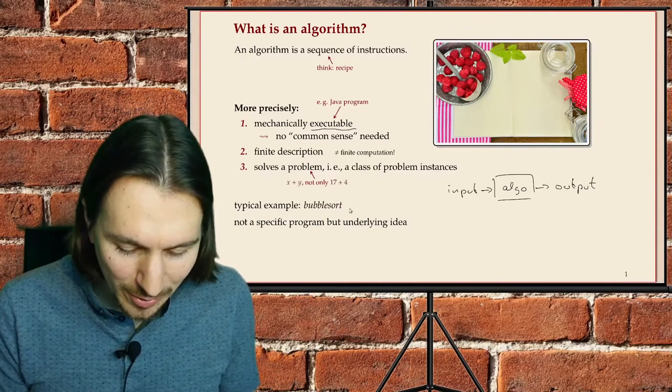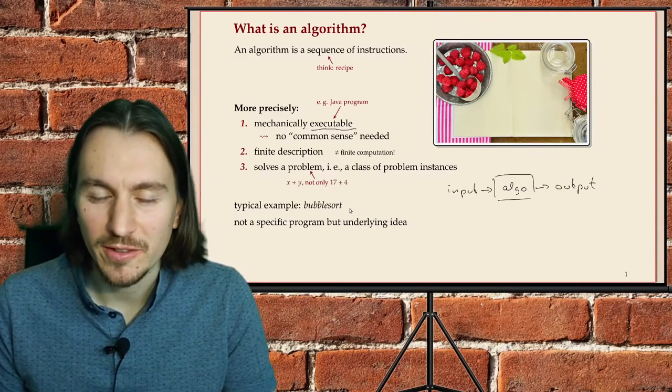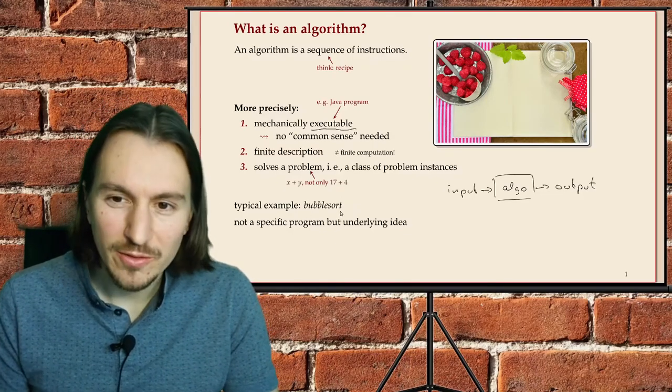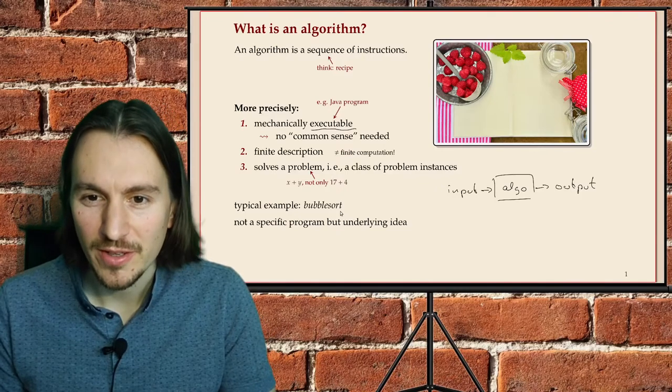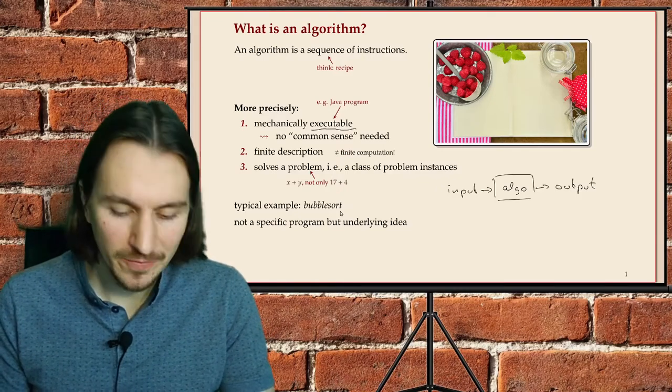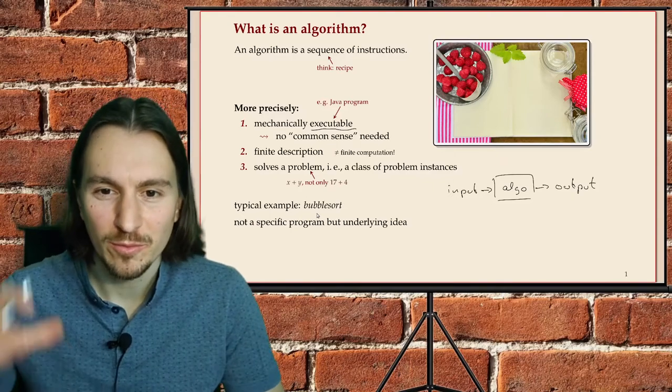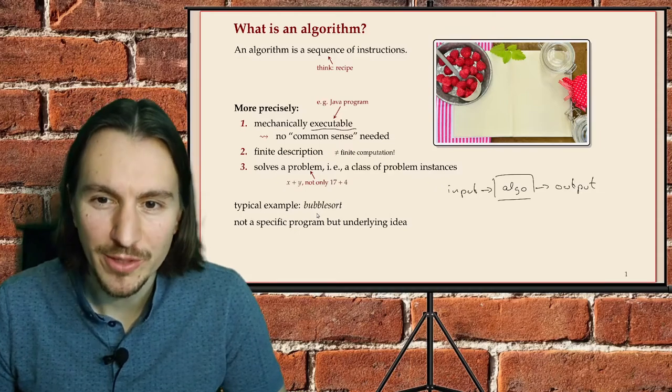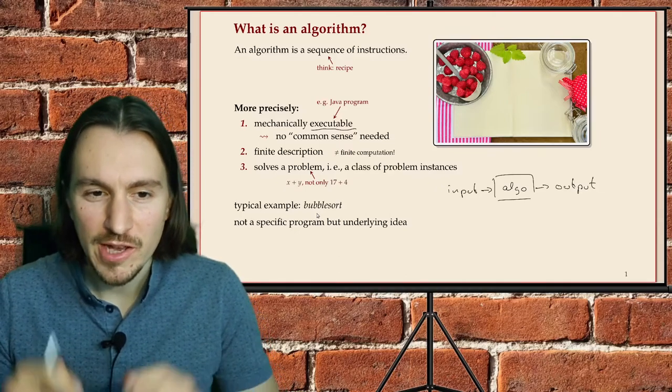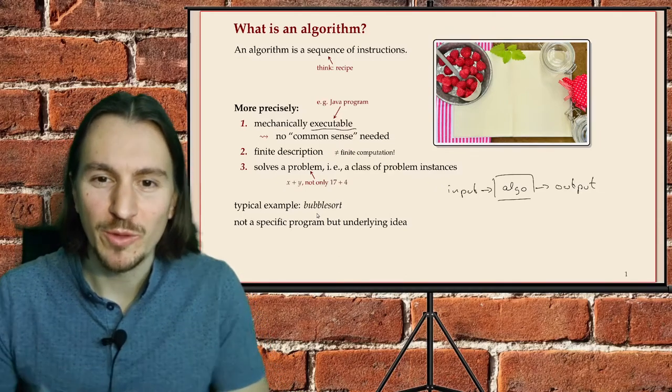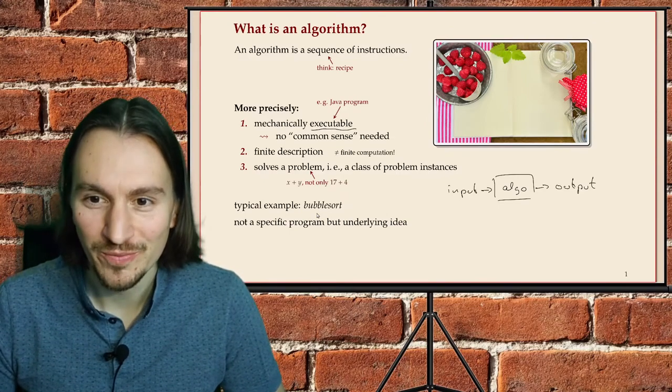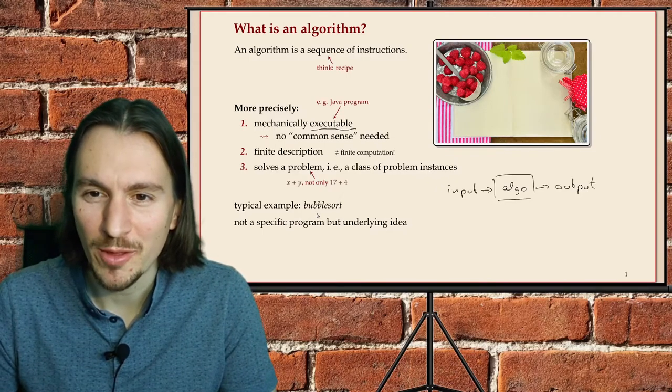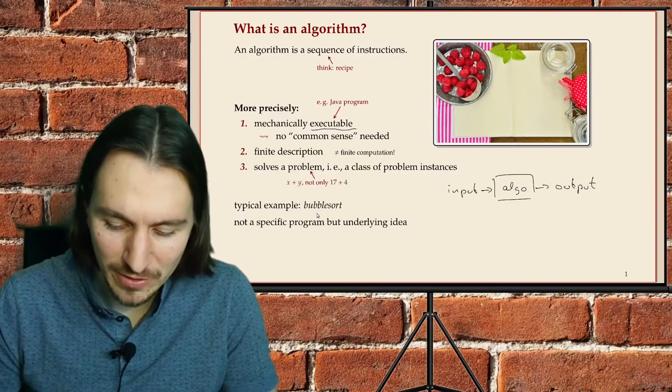Again, a typical example might make this clearer than the abstract description. An algorithm, I would say bubble sort is an algorithm. But it's not about how exactly you bring this in the form of code. It's not the Java code that you produce that implements bubble sort. The algorithm is more the conceptual idea of how bubble sort sorts. It's a bit vague, I agree. But it's again something that from examples, it often makes sense.